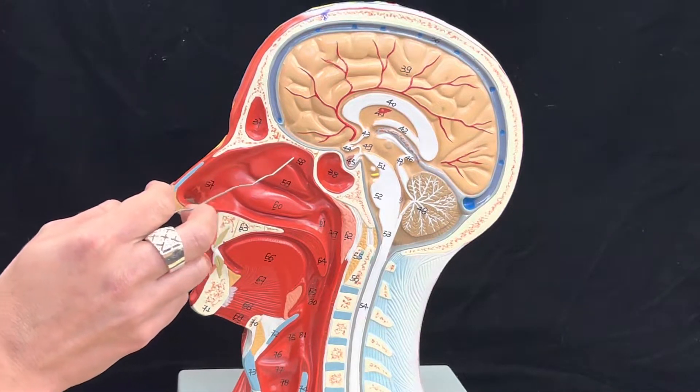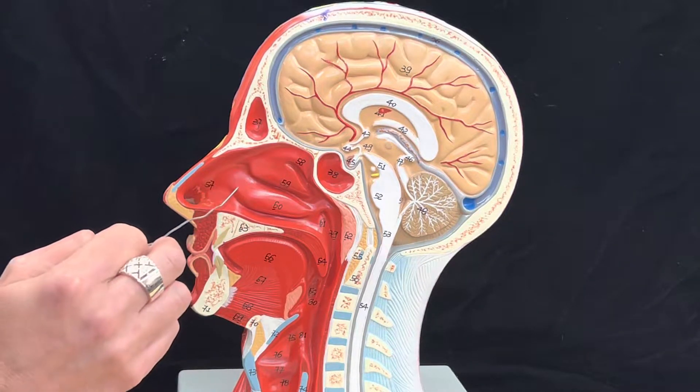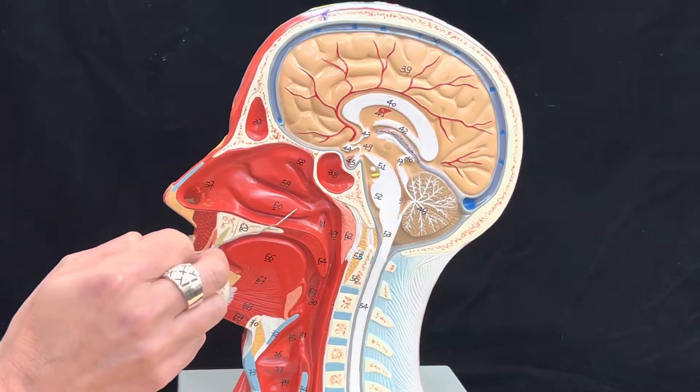We have one on the top, the superior nasal concha, one in the middle, the middle nasal concha, and the inferior nasal concha, inferiorly.